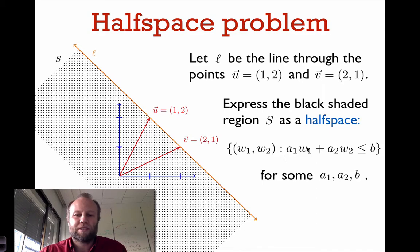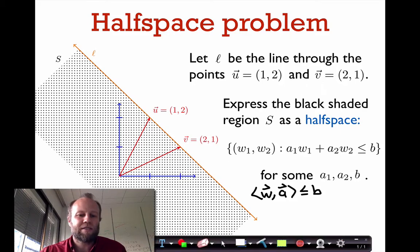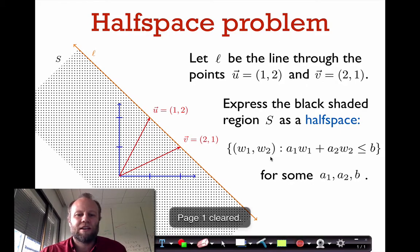Another way that we can think about this inequality is that it says the dot product of w and a is less than or equal to b. So that's a half space and we want to express this region S as a half space.